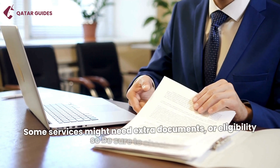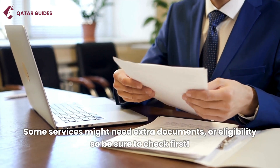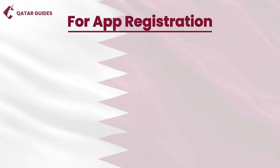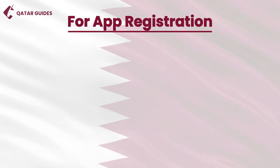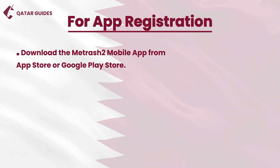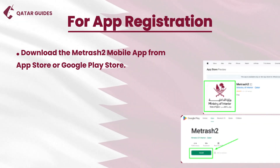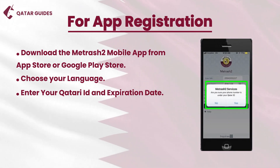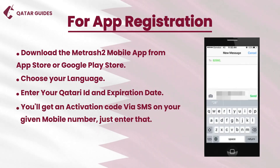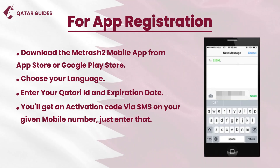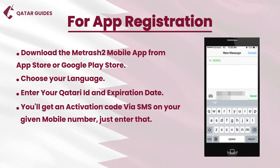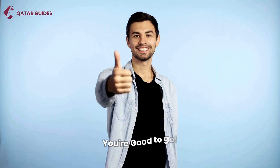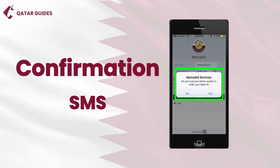Some services might need extra documents or eligibility, so be sure to check first. For app registration, simply follow these steps: download Metrash 2 from the App Store or Google Play Store, choose your language, enter your Qatar ID and expiration date, and you will get an activation code via SMS on your registered mobile number.